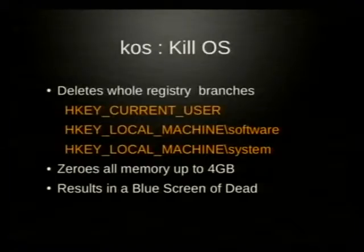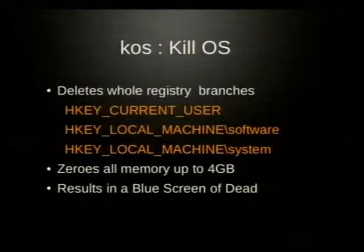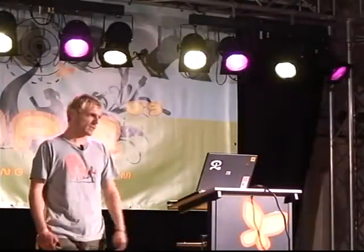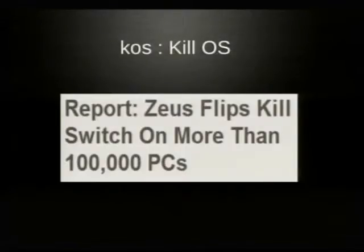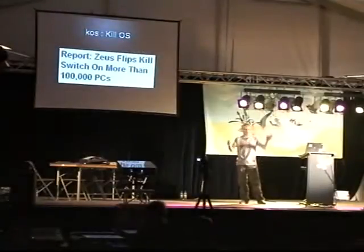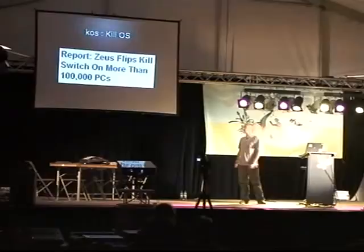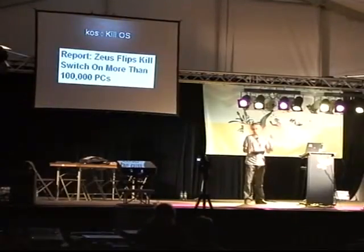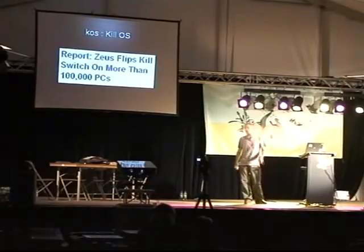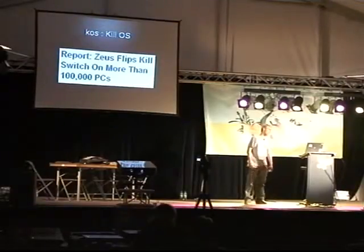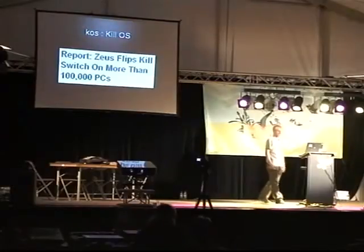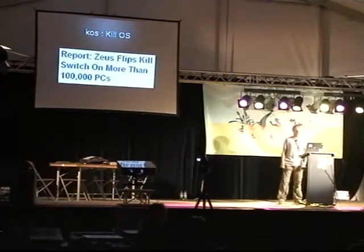The kill OS switch completely deletes registry branches, zeroes all memory up to 4 gigabytes, and the rest results in a blue screen of death. At the end you are not able to reboot your system cleanly because the main important files are missing. The guy from the Zeus tracker — a Google Maps page where you can see the command and control servers of Zeus strains — already had access to a database of stolen data, and saw that one cyber criminal really executed this kill OS command. So this feature does get used by cyber criminals.